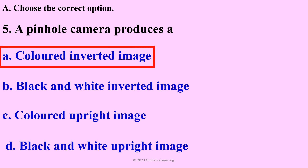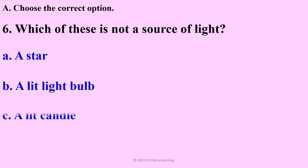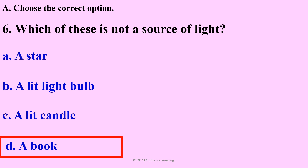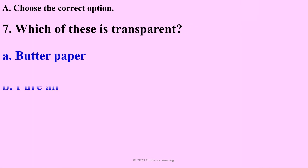The sun. A pinhole camera produces — answer: A — colored inverted image. Which of these is not a source of light? — answer: D. A book. Which of these is transparent? — answer: B.